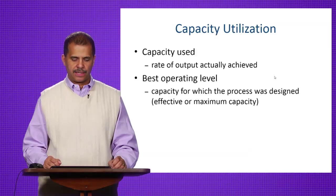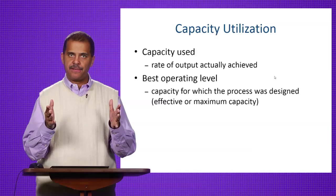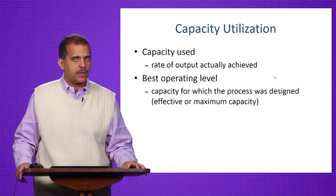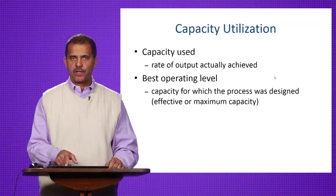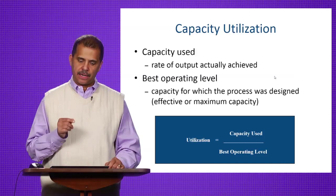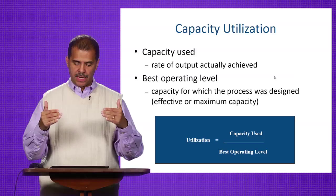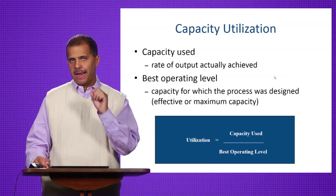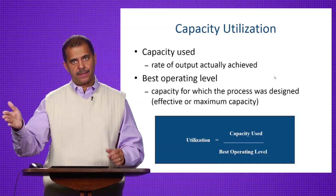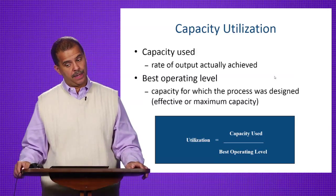Now let's talk about capacity utilization — it's the rate of output actually achieved, which is capacity used. You fundamentally have to look at your best operating level. The formula is capacity used divided by the best operating level, which gives you the percentage of utilization. It can range from 0% to 100%, and in actuality it can be greater than 100%.